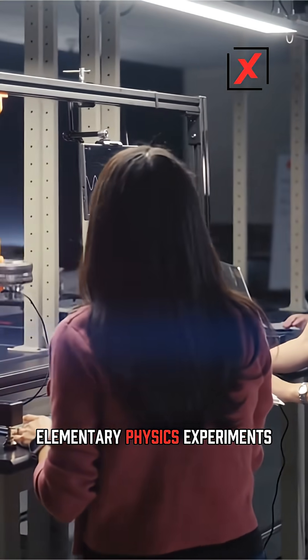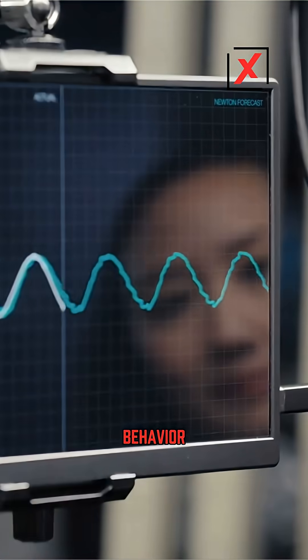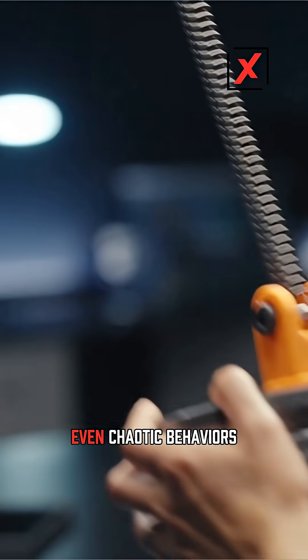We started with elementary physics experiments. Newton could accurately predict the future behavior of classic mechanical systems, even chaotic behaviors.